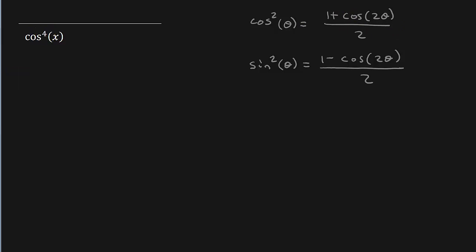But we can rewrite cosine to the fourth as cosine squared squared, right? Because if you have an exponent here, exponent here, what do you do? You multiply them. Two times two is four. So this is the same thing as this, just written differently.